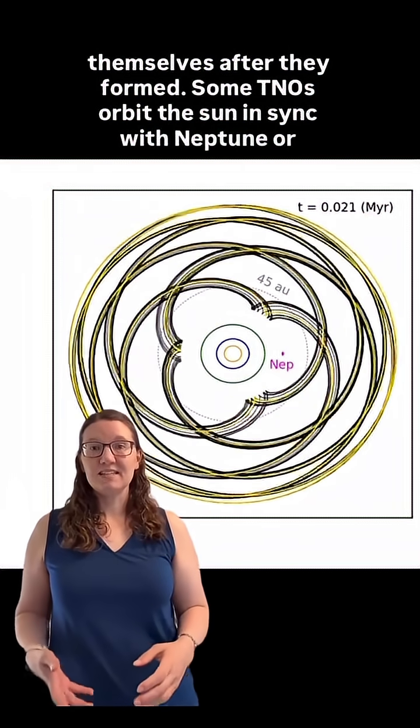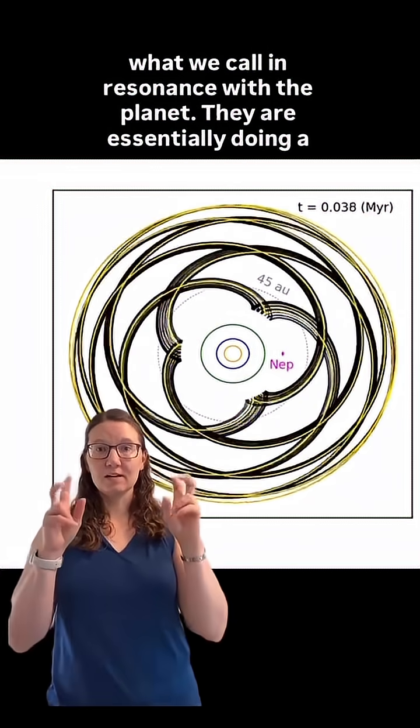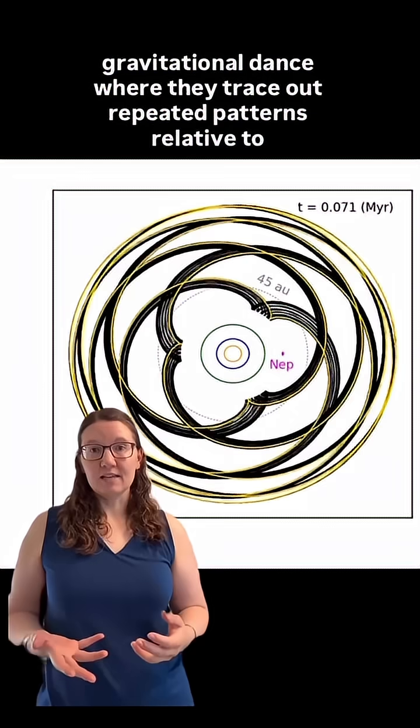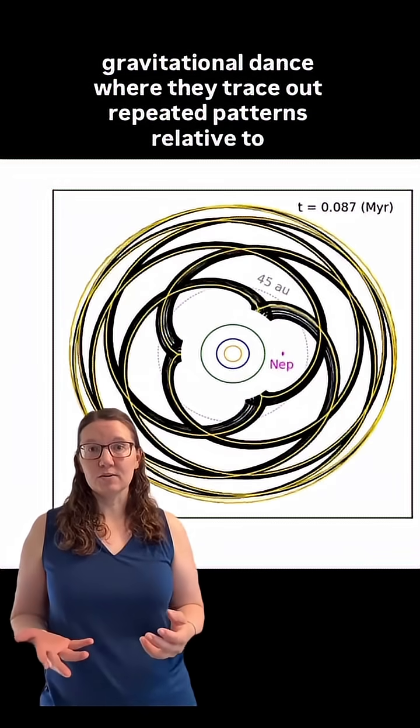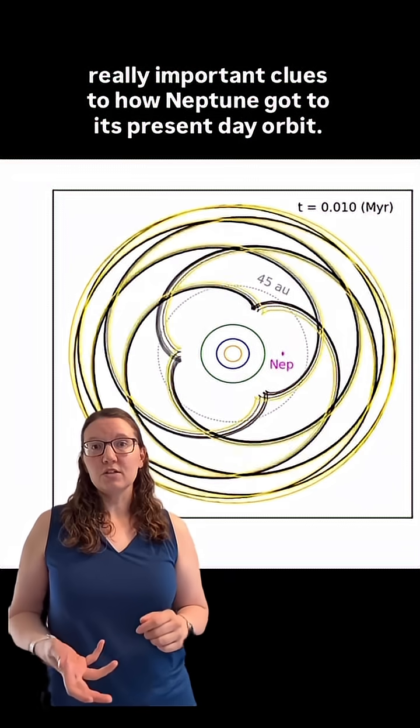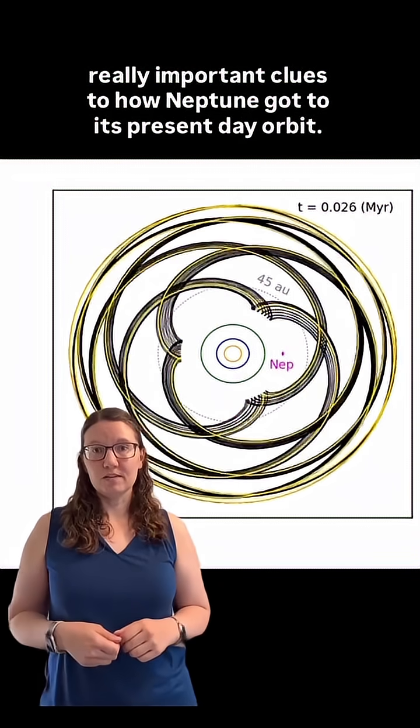Some TNOs orbit the Sun in sync with Neptune, or what we call in resonance with the planet. They are essentially doing a gravitational dance, where they trace out repeated patterns relative to Neptune. Because of this dance, these objects provide really important clues to how Neptune got to its present-day orbit.